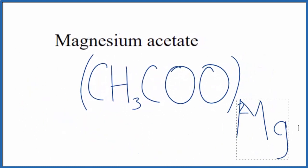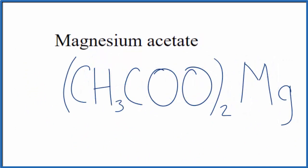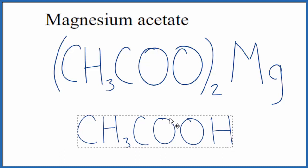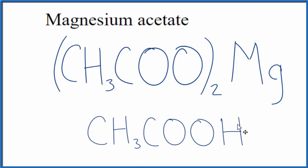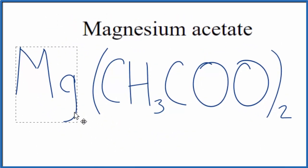Sometimes you'll see the magnesium written after those two acetate ions. That's because the acetate ion comes from acetic acid. When acetic acid reacts, this hydrogen right here, that's what's involved in the chemical reaction. So you can kind of think of the magnesium replacing the hydrogen. That's why you'll see it after the acetate ion sometimes. Either way is correct. I personally like it this way.